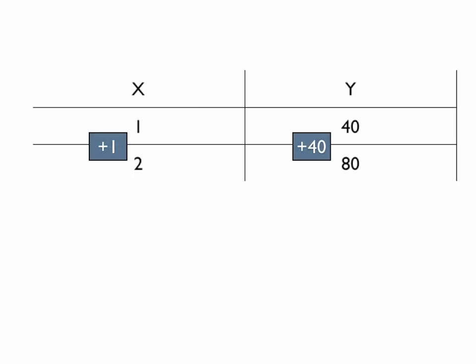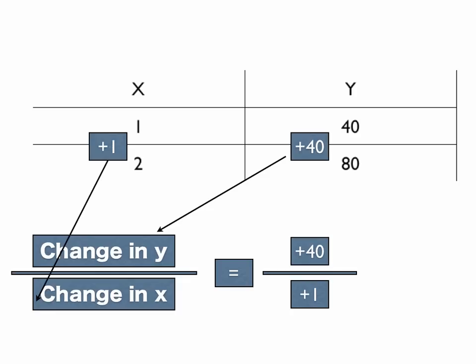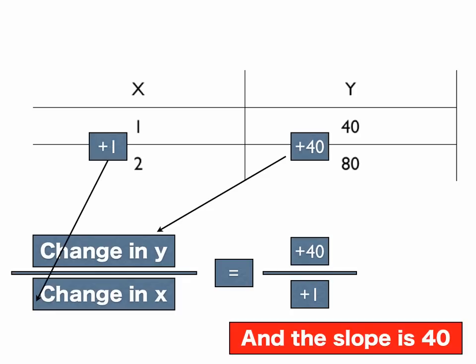And so to find rate of change, you put the change in Y over the change in X. The change in Y, like we said, was positive 40, and the change in X was positive 1. And so the slope, or the rate of change, is 40. For every game that we add on, basically, we're paying 40 more bucks. And that is a basic introduction to rate of change and slope.